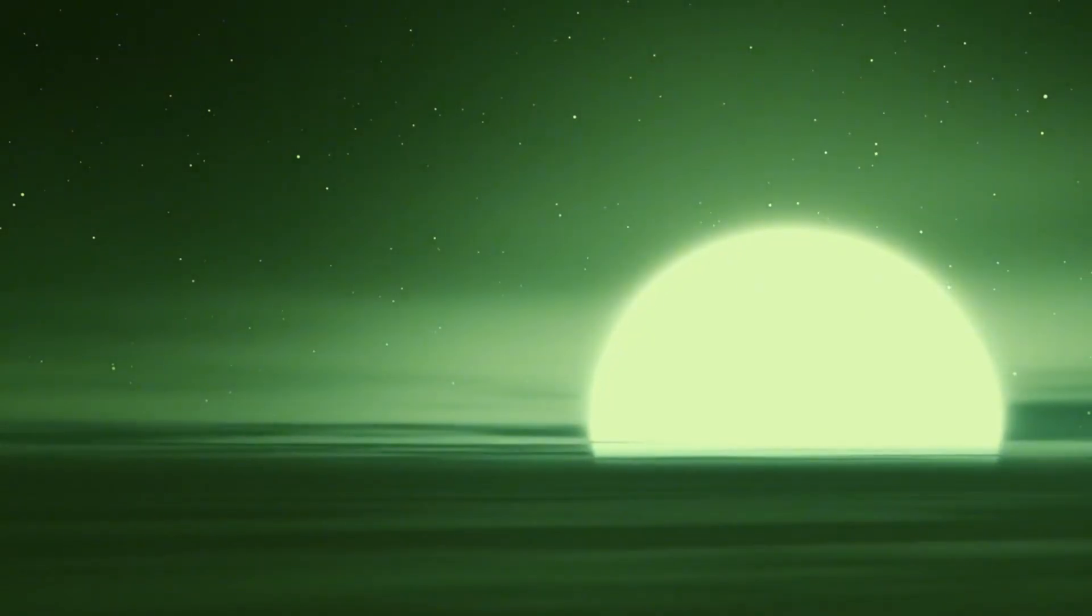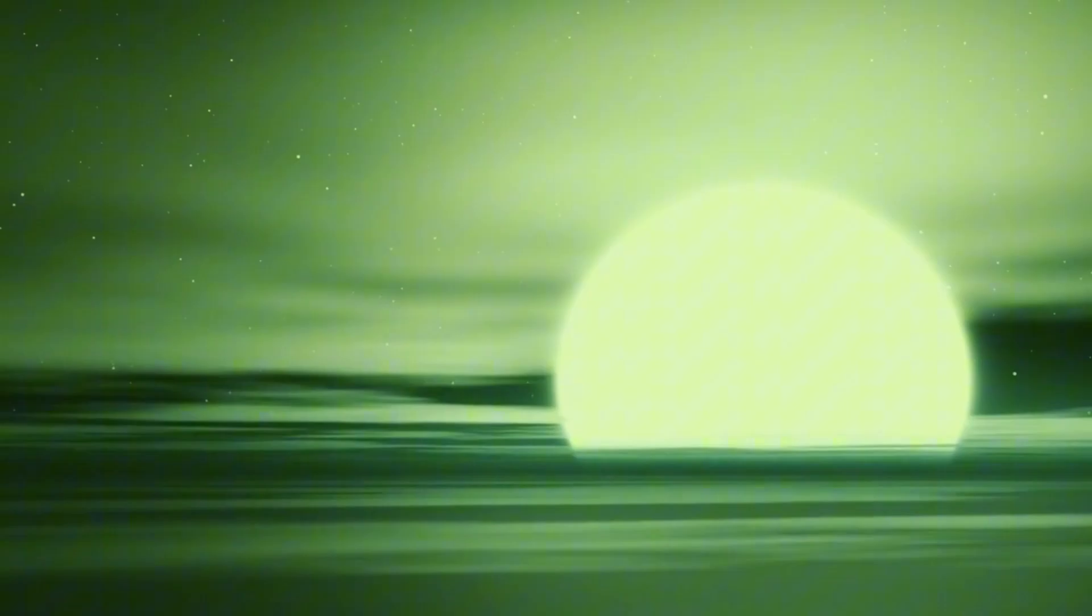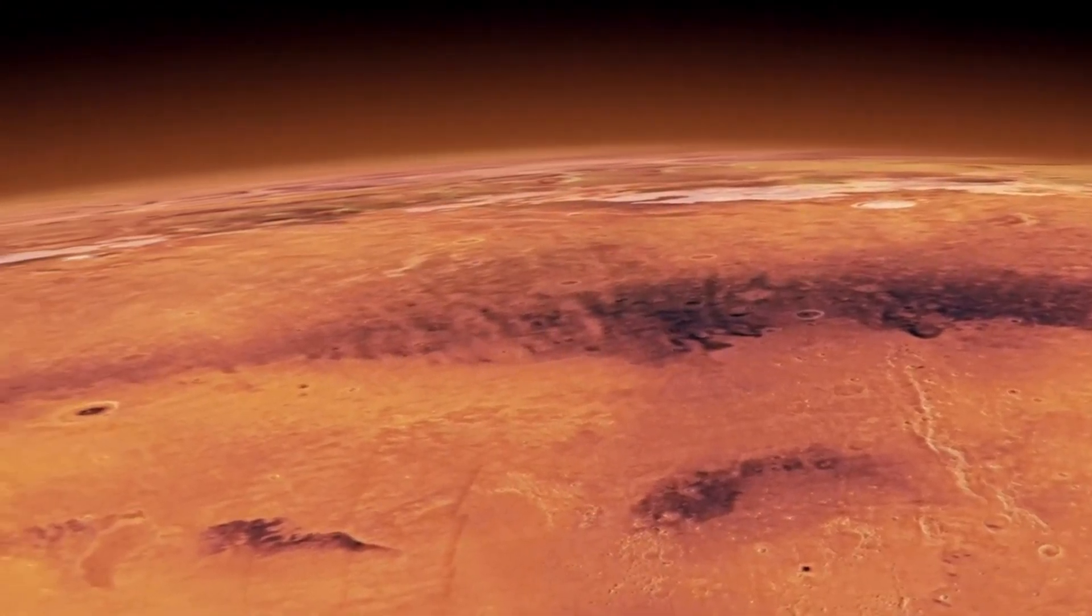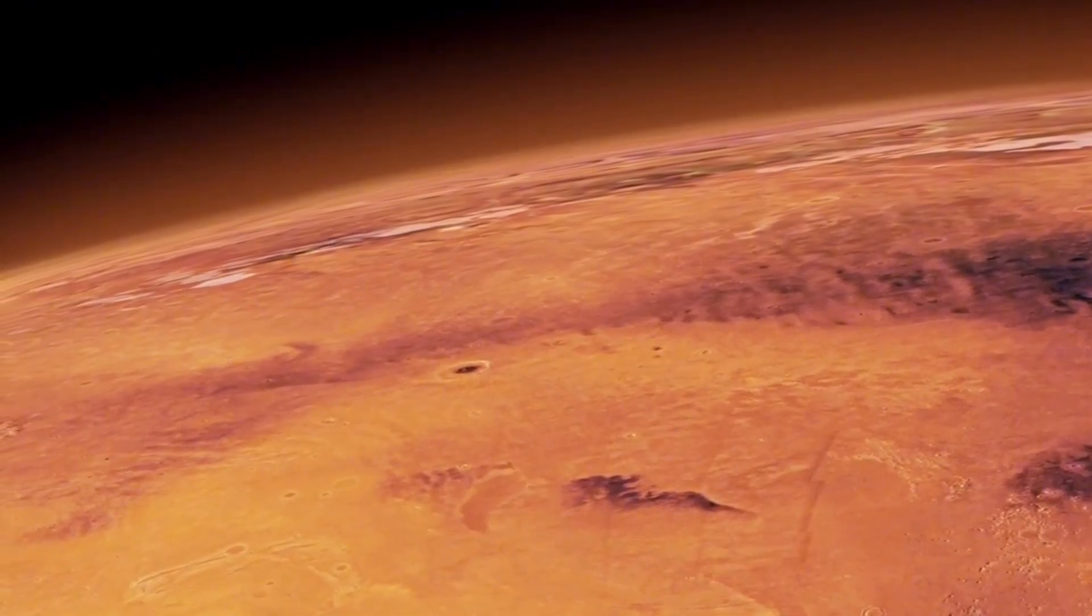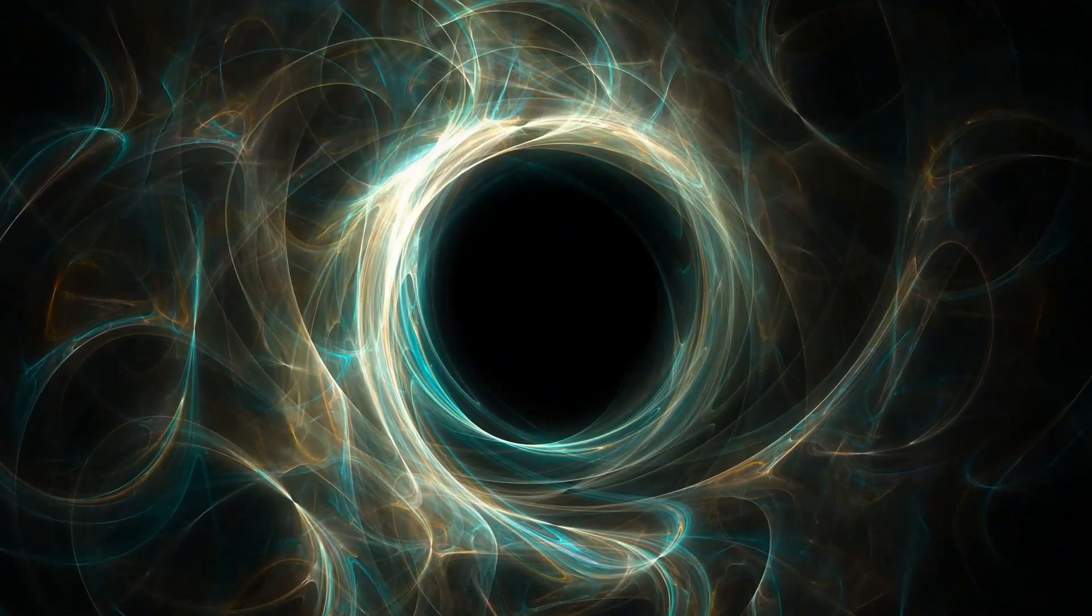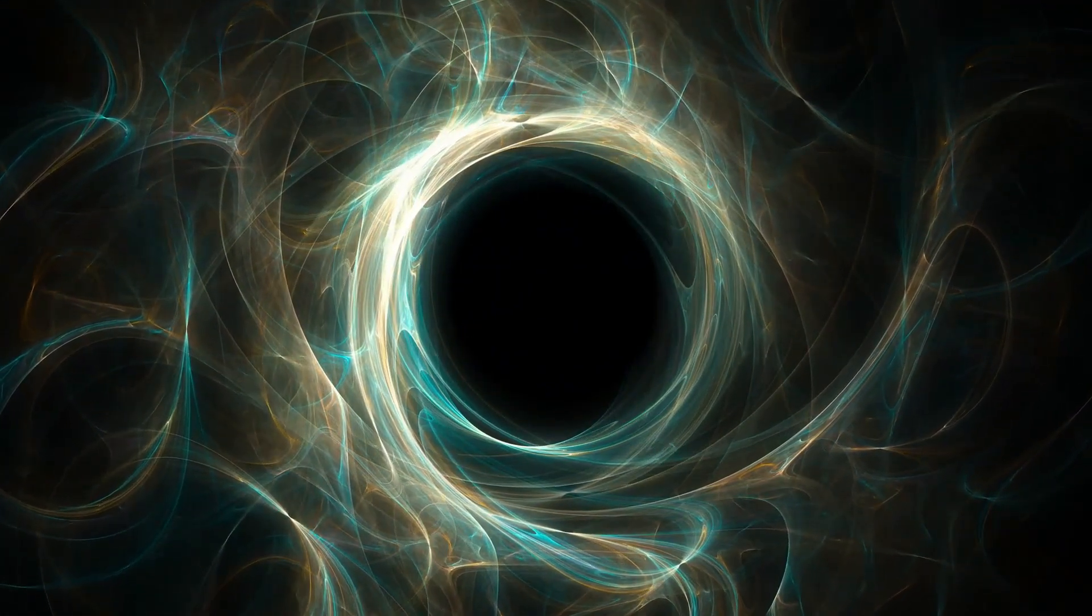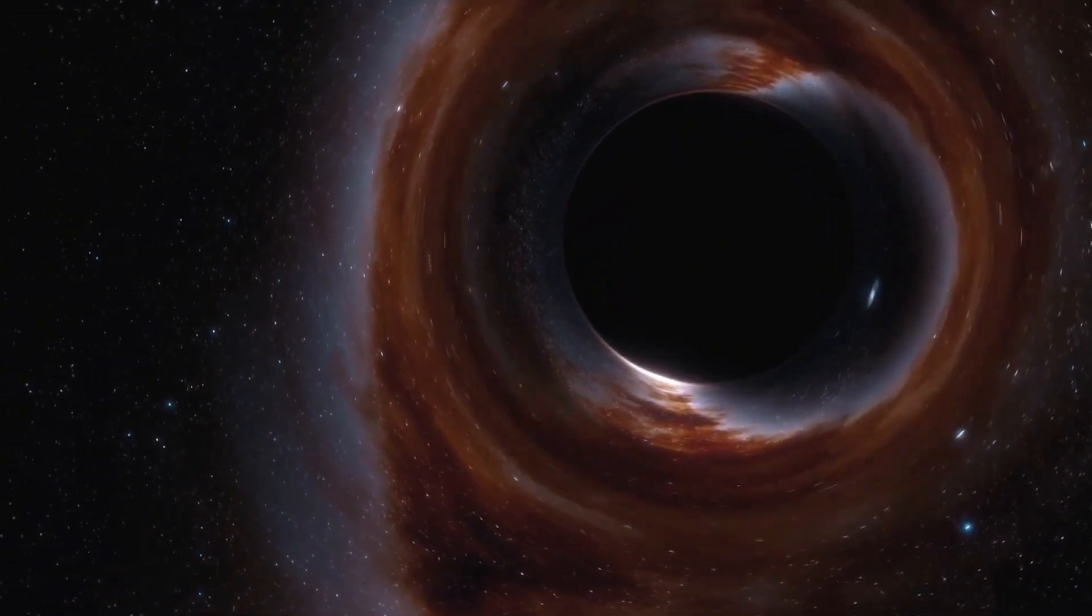How do these voids form? Computer simulations have shown that smaller, more normal voids result from the gravitational pull of galaxies bringing them closer together and leaving empty spaces behind. However, this explanation doesn't apply to the Boötes void, as there simply hasn't been enough time since the universe began for gravitational forces alone to clear out such a vast space of this enormous size.